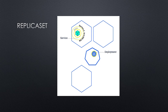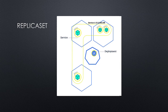The next concept is called a replica set. The basic definition for replica set is how many of what pods need to be running. You can even say in your replica set it has to be on two different nodes or whatever else. A replica set is just defining how many of the same container we need to run.